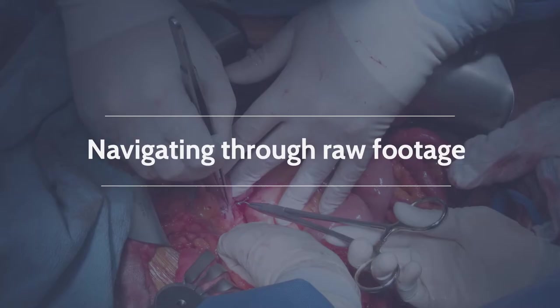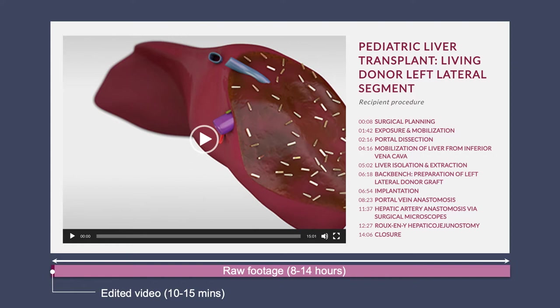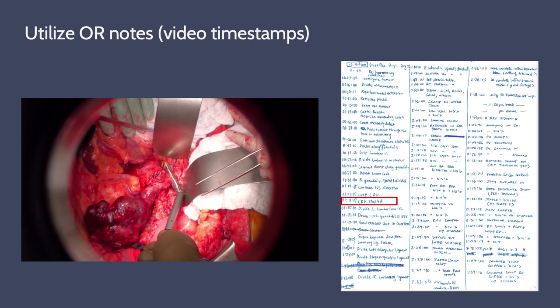We'll begin by going over how we deal with editing our raw footage. We have been filming surgeries for about a decade now, and the cases can go quite long. We usually start around 8 o'clock in the morning and may not get out until later in the evening. It's not uncommon to be dealing with 8 to 14 hours of footage for one case. The target runtime for our video is around 10 to 15 minutes, which means we have to manage and edit a large amount of raw footage. Having dealt with these projects over several years, we've developed some strategies for being more efficient in the video editing process.